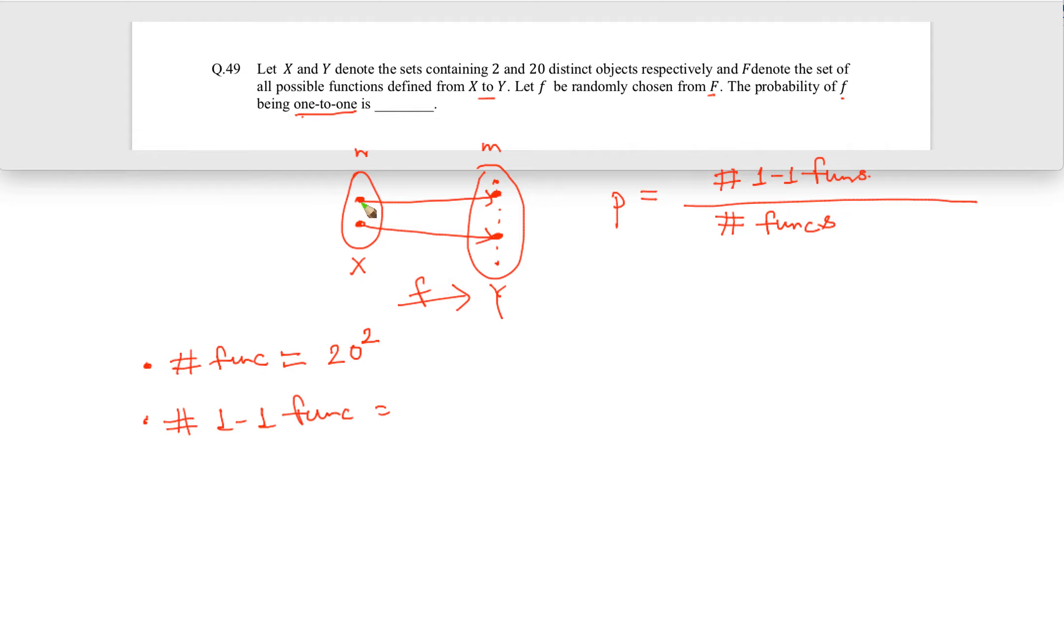However, there are other ways also. You could have mapped something like this also. So 2 factorial, like two ways once you choose two of them. Basically you choose 2 out of 20, and once you choose 2, after that there are two ways in which that mapping can be. So total number of one-to-one functions is 20 choose 2 into 2 factorial divided by 20 square.